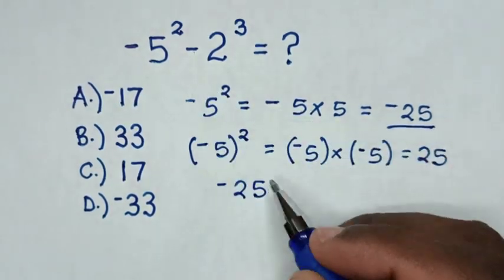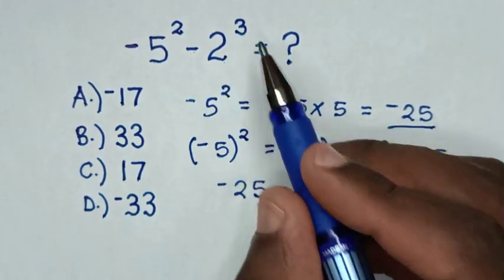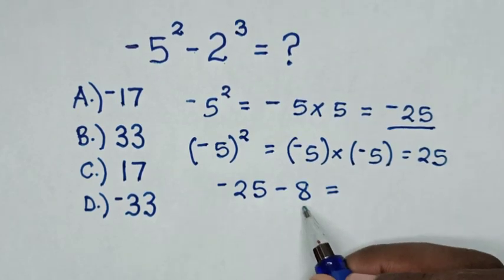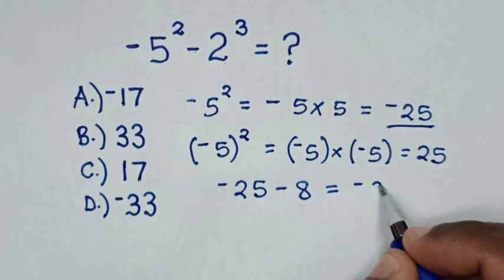Then, minus 2 power of 3 is same as 8, then it is equal to negative 25 minus 8 is negative 33.